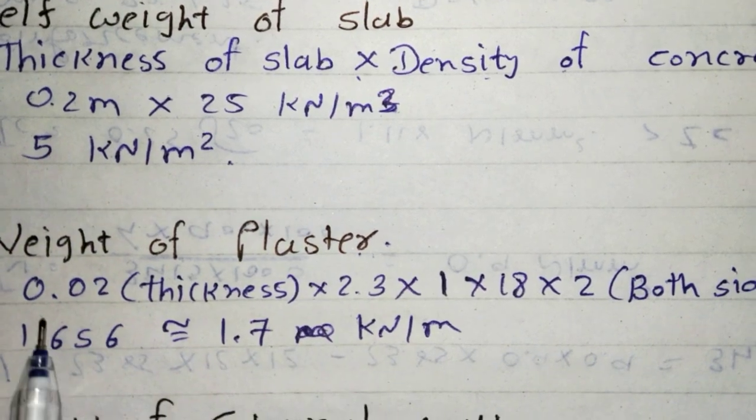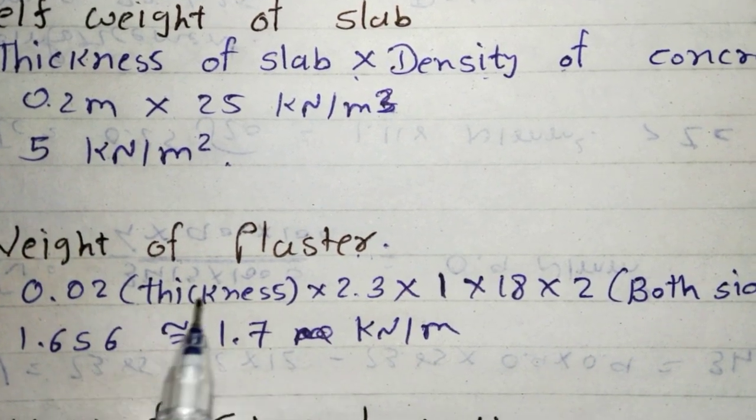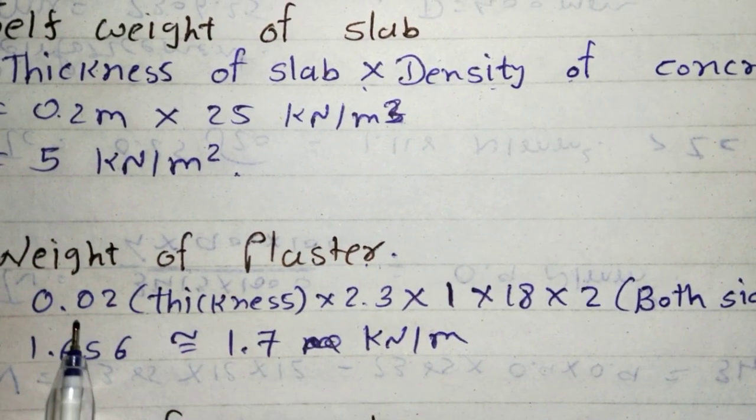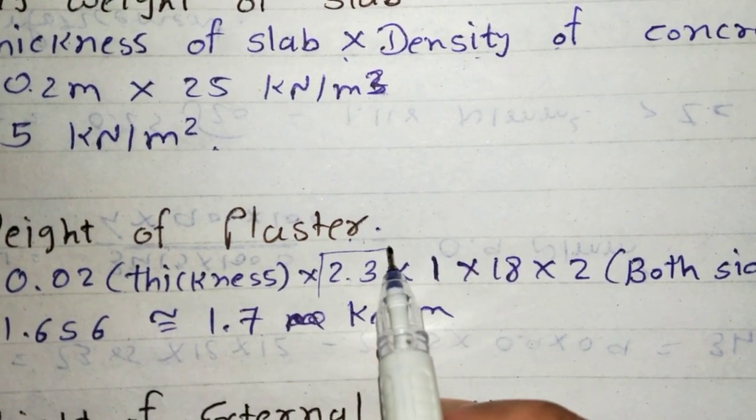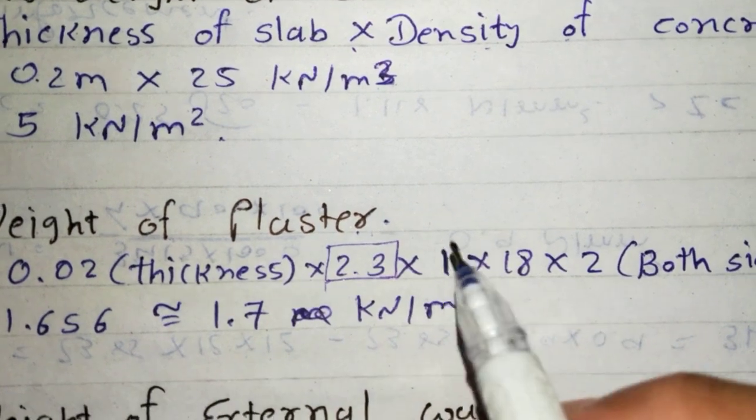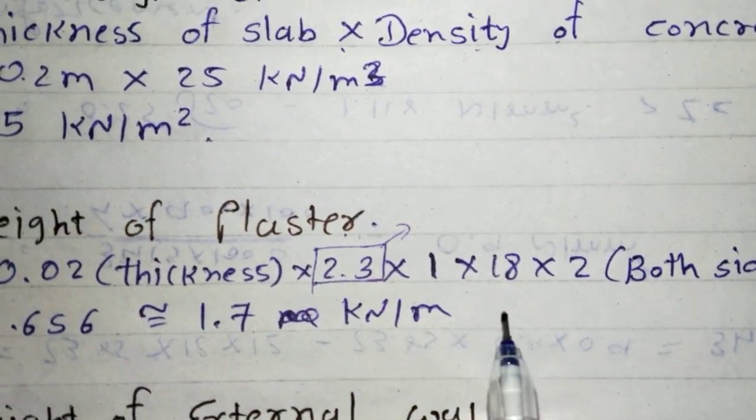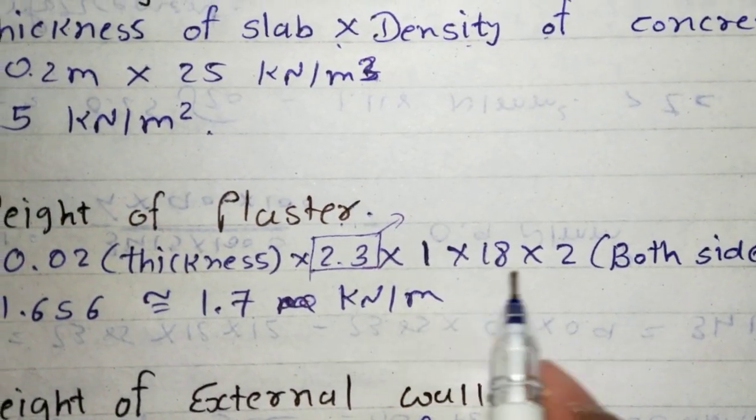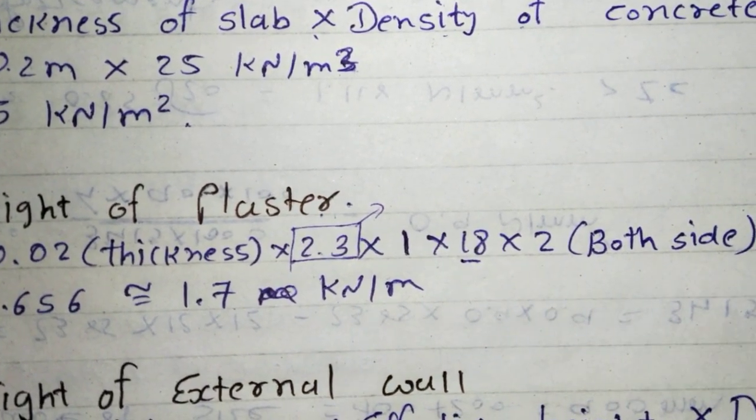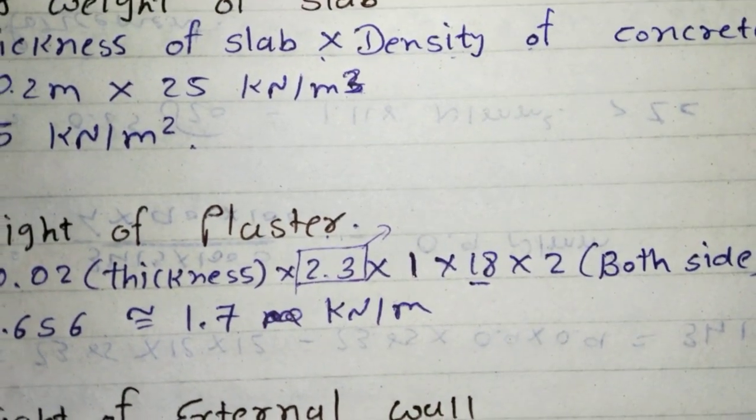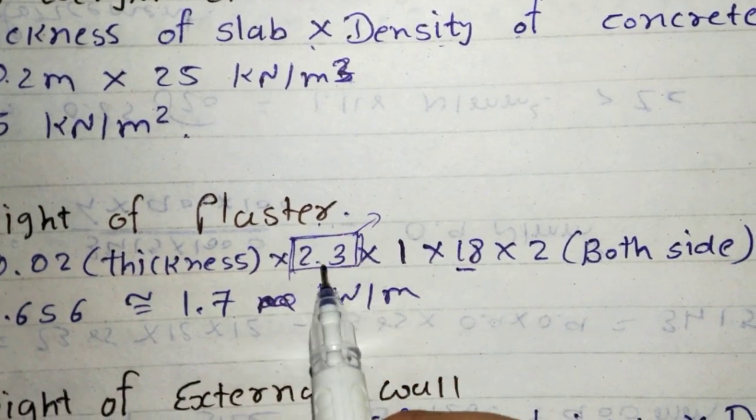Here weight of plaster is 0.02 which is the thickness of plaster, into 2.3. This will be explained later. This is the 1 meter height, then this is the density of plaster, then 2 is the both side of plaster. Now what is 2.3? We will understand.